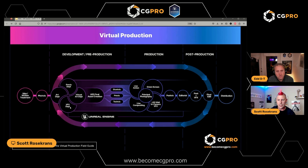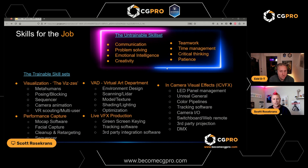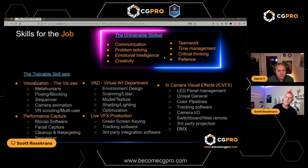The real-time aspect is the integration of the post world into the production world — that's where the magic lies. Now let's look at the skills you need to work in this space. I've laid out a list of untrainable skills. When I'm looking at resumes and interviewing people, this is really what I need my artists to have: communication, problem solving, creativity, emotional intelligence, and patience — essentially the ability to work in a high-stress environment.